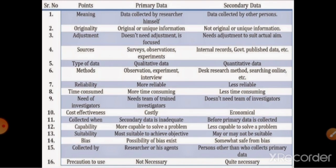In terms of adjustment: primary data does not need adjustment, but secondary data needs adjustment based on the information relative to the problem being investigated. Sources used: surveys, observations, and experiments are needed in primary data, while internal records and government-published data are required for secondary data. Type of data: primary data is qualitative, secondary data is quantitative. Methods used: observation, experiment, and interview methods are used for primary data; desk research and online searching methods are used for secondary data. Reliability: primary data is more reliable and good in quality, while secondary data is less reliable.